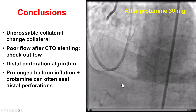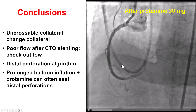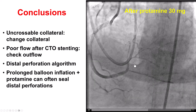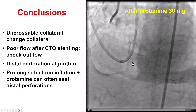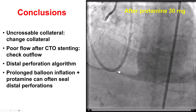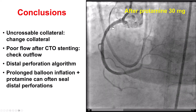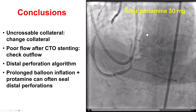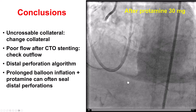To summarize: some small distal vessel perforations do not necessarily need a coil or fat, but can potentially be treated by placing a balloon, then removing the balloons, wires, and all coronary equipment except for the guide, and administering protamine. That was successful in our case. Thank you.